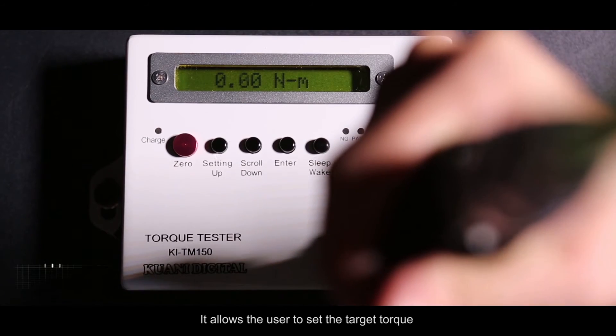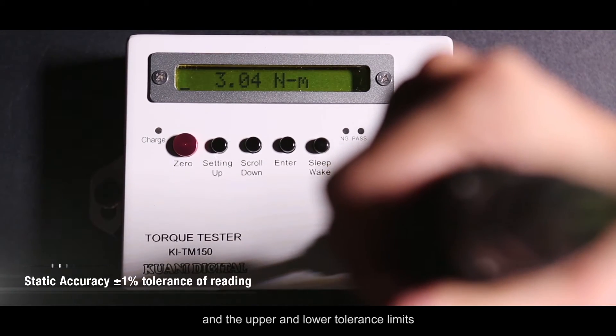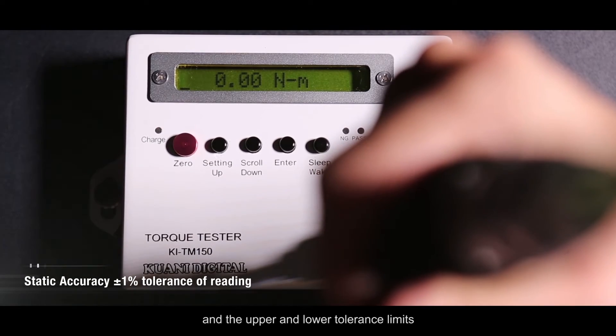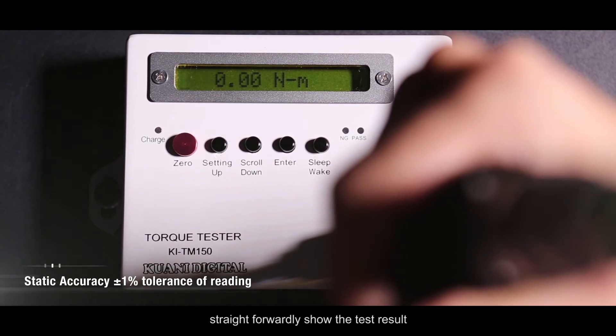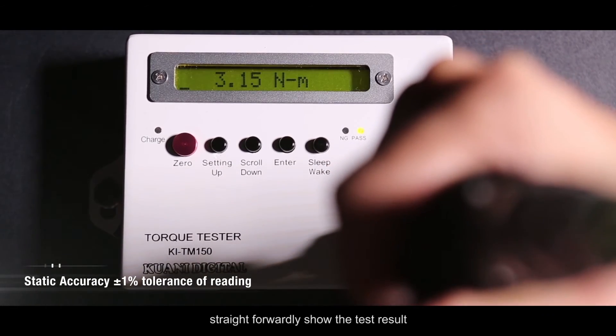It allows the user to set the target torque and the upper and lower tolerance limits. The green pass light and red NG light straightforwardly show the test results.